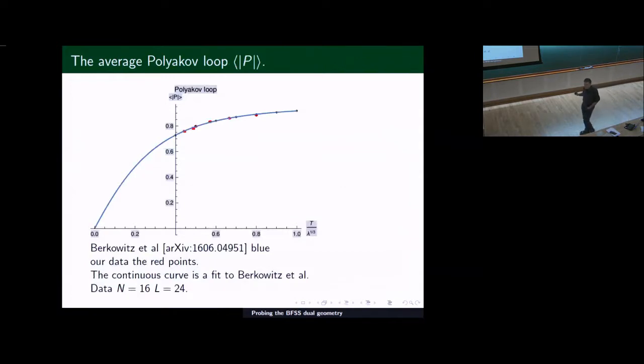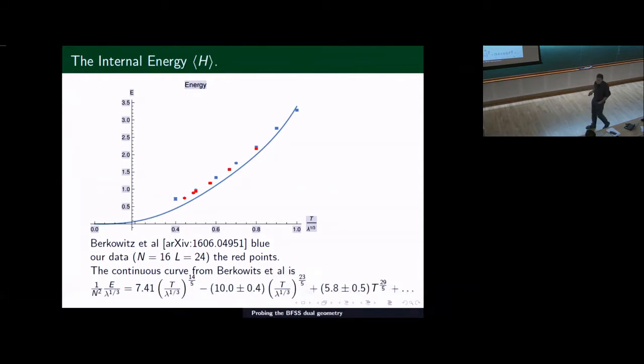Just to check that everything is in order, we repeated the computations of the Polyakov loop. I'm showing it here for N equals 16, L equals 24. The red dots are our simulations. This is an extrapolation of Berkowitz et al.'s high precision simulations. And I've taken their data for N equals 16 and put it as dots here. And ours are the red ones. And with the lattice size, it was 24.